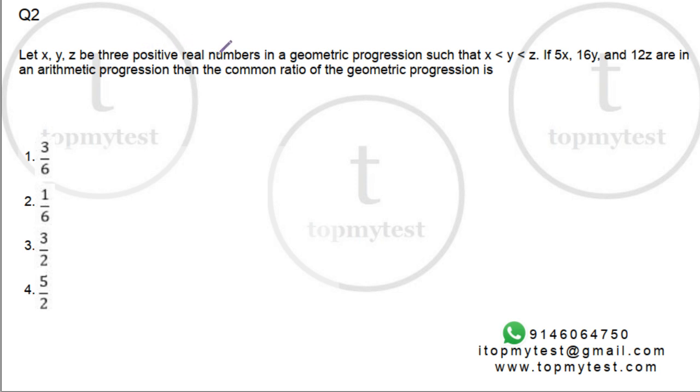If x, y, z are three positive real numbers in geometric progression, so they are in geometric progression, such that x is less than y, which is less than z. So it's an increasing geometric progression. They are positive numbers, so it's an increasing geometric progression, x is less than y, which is less than z.